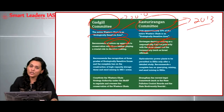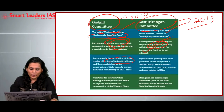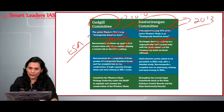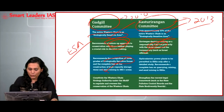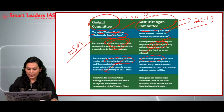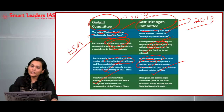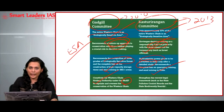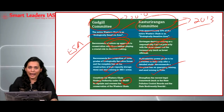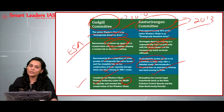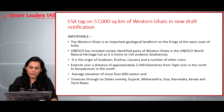Another difference between the Gadgil and Kasturirangan committees relates to the recognition of ecologically sensitive zones. The Gadgil Committee report classified the ESA into three broad categories: Zone 1, Zone 2, and Zone 3. Zone 1 includes the highly protected area with a complete ban on mining, construction, and other infrastructure development activities. However, according to the Kasturirangan Committee report, hydroelectric power plants were permitted within the ESA area after detailed study. The Kasturirangan Committee also recommended a ban on quarrying, mining, and sand mining in ecologically sensitive areas. The Gadgil Committee report proposed constituting a Western Ghats Ecology Authority under the Ministry of Environment and Forests, given statutory status under the Environment Act, while the Kasturirangan Committee proposed no such authority — just a strengthening of the current legal framework.